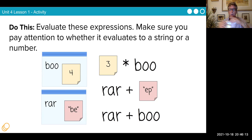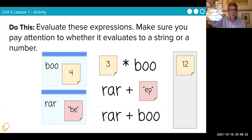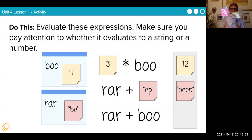Evaluate these expressions. Make sure to pay attention whether it evaluates to a string or a number. I've got boo needs four and raw gets 'b'. Boo gets four. Raw gets 'b'. There's my fabulous 'b'. 'b' is going into raw. So I have boo and raw, my two variables. Three times boo. Boo is four. So three times four times boo is going to be 12. Raw plus 'ep'. Raw is 'b', so raw plus 'ep' is going to be 'beep' in quotation marks. Raw plus boo. So that's going to be 'b4'.